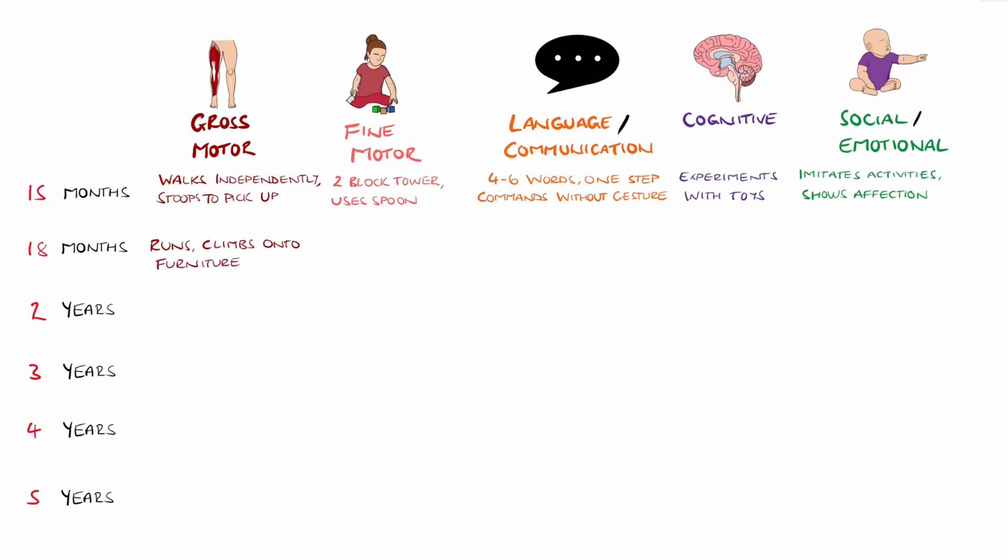At 18 months, gross motor features include running and climbing, for example onto furniture, with fine motor skills including stacking four blocks and scribbling. Language typically features 10 to 25 words and being able to point to one to three body parts. Their cognitive milestones can include symbolic play, for example give teddy a drink, and socially they can play simple pretend and start to have increasing independence.